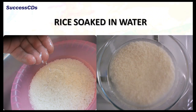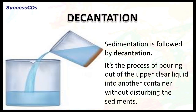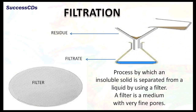Now let's talk about methods used for separating insoluble solids from liquids. Have you ever wondered why your mother soaks rice grains in water before cooking them? The rice grains, being heavier, settle at the bottom, and the upper layer of water which contains dust and other impurities is decanted away. Sedimentation is a process in which heavier particles of an insoluble solid in a liquid settle down; the solid particles called sediments form a layer. Sedimentation is followed by decantation — the process of pouring the upper clear liquid into another container without disturbing the sediments.